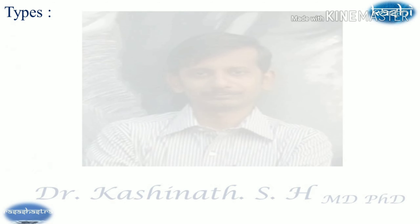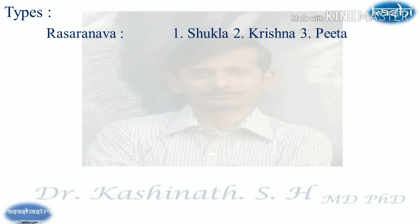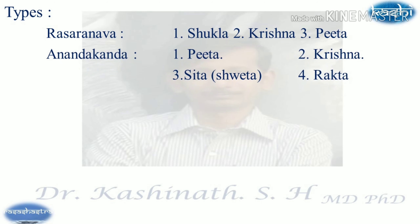Regarding types: in Rasara Nova text, three varieties have been mentioned — Shukla, Krishna, and Vita. In Anandakanda, four varieties have been mentioned: Vita, Krishna, Sita, Arshveta, and Prakta.